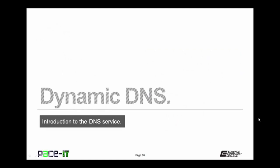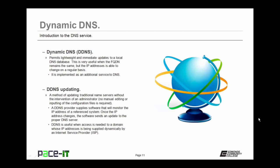Now let's move on to dynamic DNS. Dynamic DNS, or DDNS, permits lightweight and immediate updates to a local DNS database. This is very useful for when the FQDN or host name remains the same but the IP address is able to change on a regular basis. Dynamic DNS is implemented as an additional service to DNS through DDNS updating — a method of updating traditional name servers without the intervention of an administrator, so there's no manual editing of configuration files required.